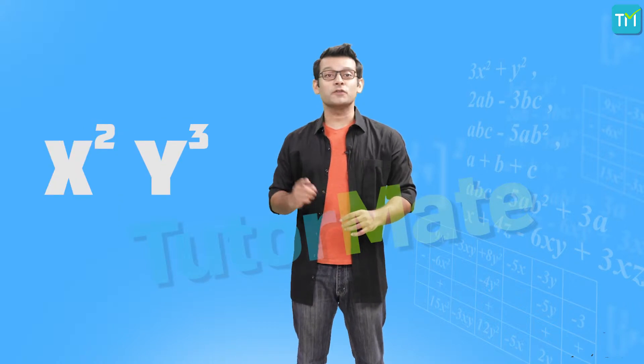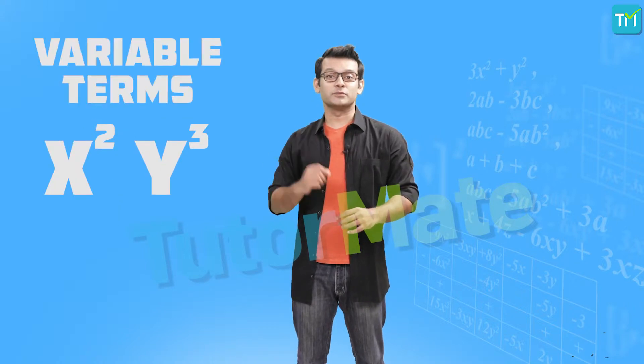We know that x, y, z, a, b — all of these are called variables. And then the terms like x square, y cube and so on are also called variable terms.